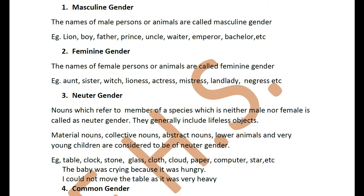Feminine gender: the names of female persons or animals are called feminine gender. Examples: aunt, sister, witch, lioness, actress, mistress, landlady, negress, etc. Negress refers to a negro — a black person, an African. The male is called a negro and the female is called a negress.